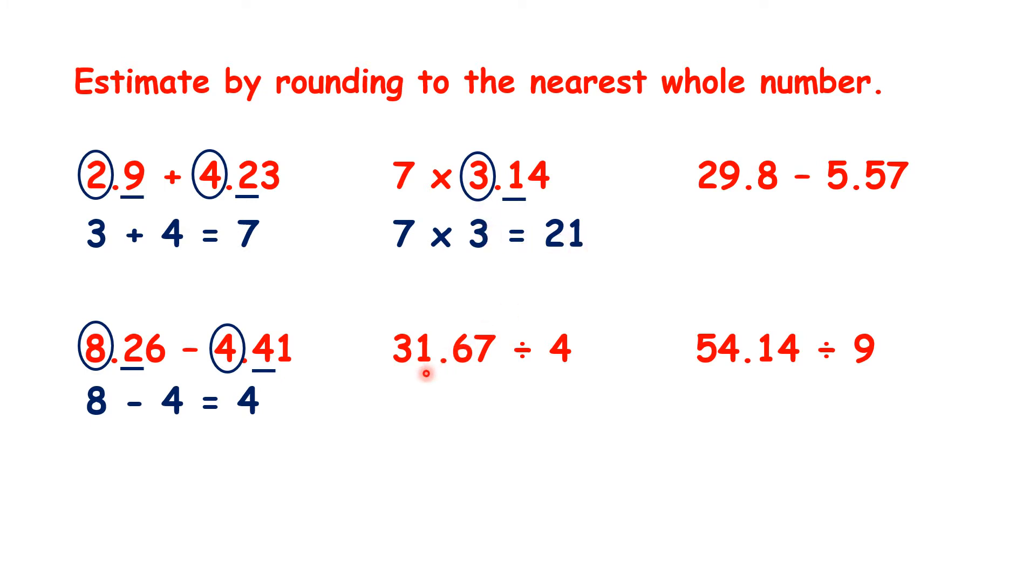Now here, with 31.67, the tenths digit is a 6, so we round up to the next whole number, which is 32. And because 32 divided by 4 is 8, our answer should be close to 8.